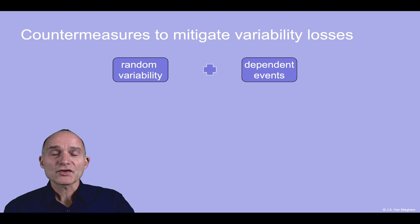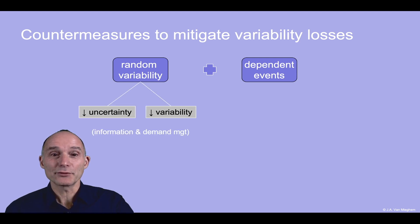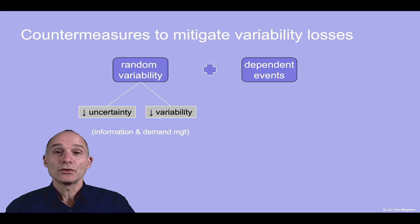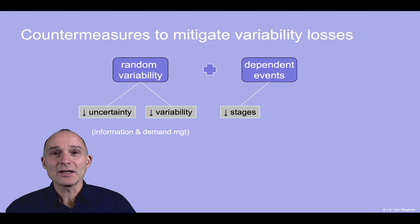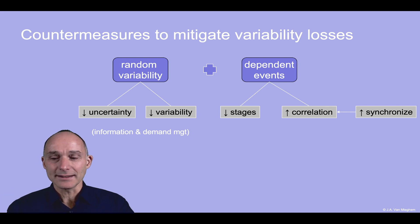So what can we do about that? To improve performance, we must reduce the shortfall. To reduce the shortfall, we can attack the root causes of the problems, and these are twofold. We can work either on reducing random variability — either by reducing the uncertainty or reducing the variability over time — all of which has to do with better information and demand management. To reduce dependency, we can reduce the number of stages. The first countermeasure in our supply chain design is improving the correlation among the stages — by that I mean synchronizing the capacity of each stage along the service chain.